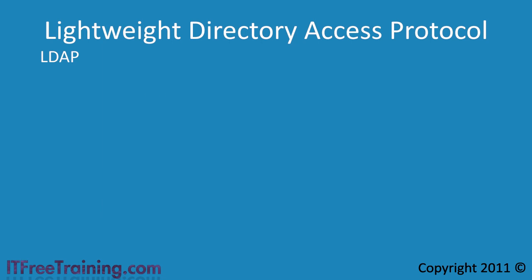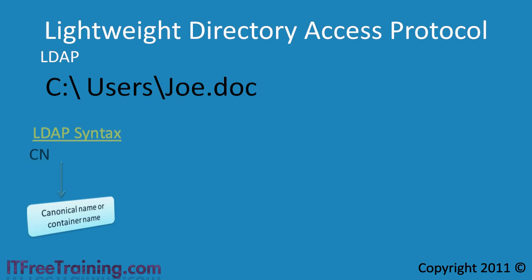To understand LDAP syntax, first consider what syntax you would use to access a file on your hard disk. To access a file you would first put the drive letter like C: followed by a slash, which gives you the root of the hard disk. To access a folder you would add the folder name like 'users', and to access a file you would add slash followed by the file name like Joe.doc. The first terminology that LDAP uses is canonical name, or container name, or CN for short. Think of this as the file name in the example, or an object in Active Directory. If you wanted to access an object in Active Directory called John, you would use CN=John.